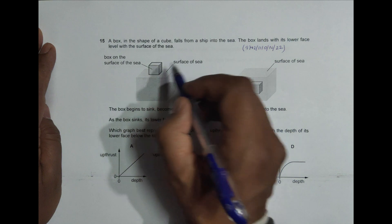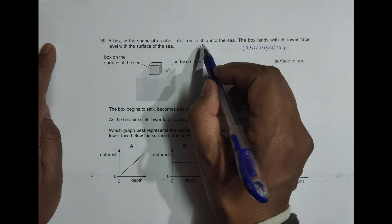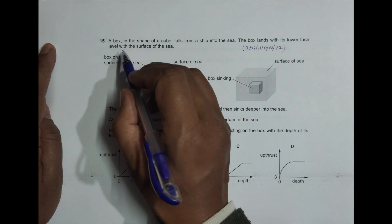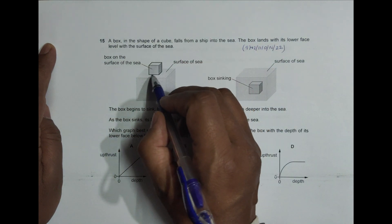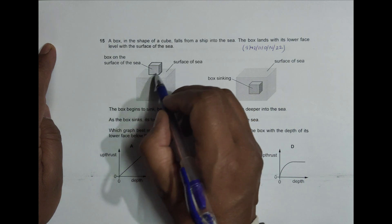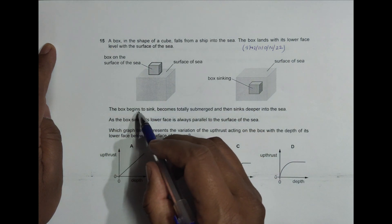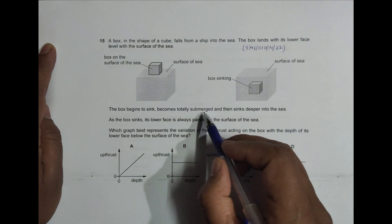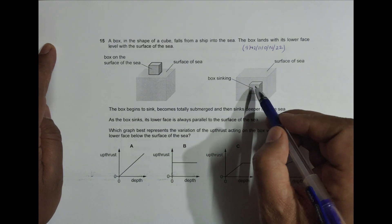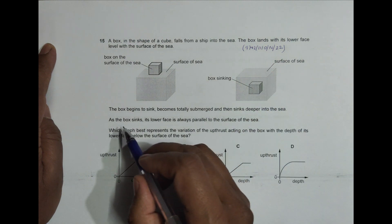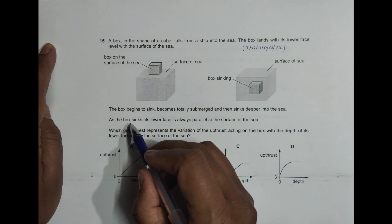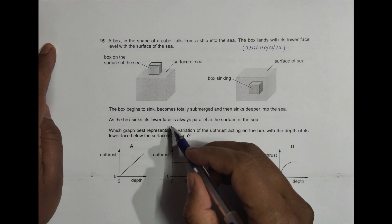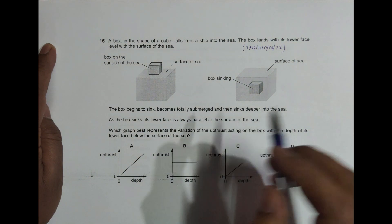A box in the shape of a cube falls from a ship into the sea. The box lands with its lower face level with the surface of the sea. The box begins to sink, becomes totally submerged, and then sinks deeper into the ocean. As the box sinks, its lower face is always parallel to the surface of the sea.